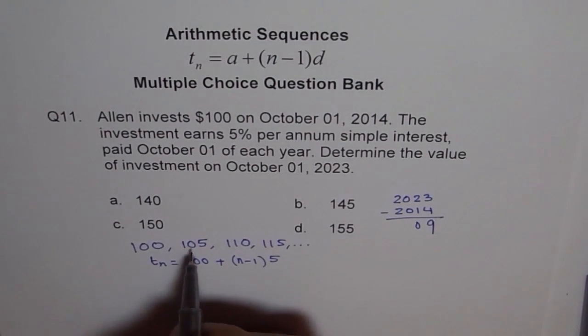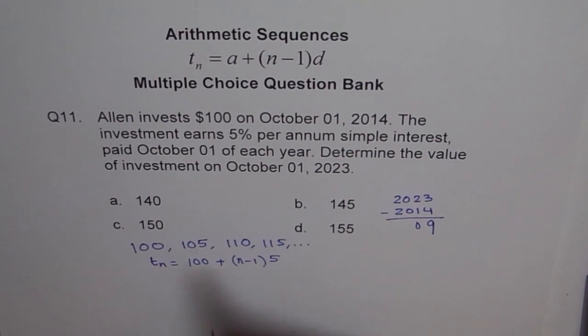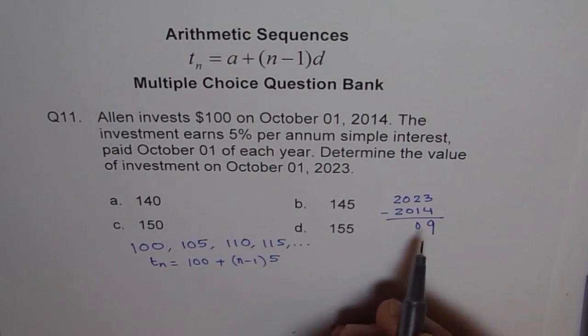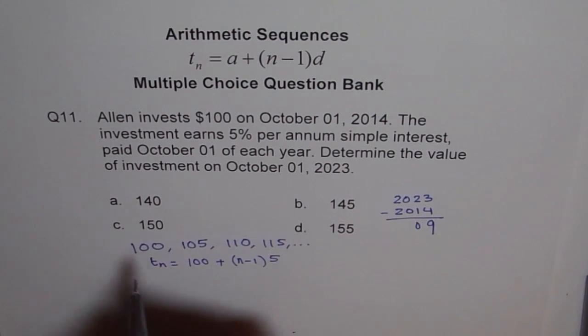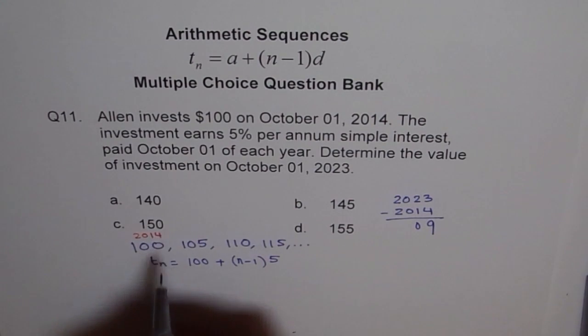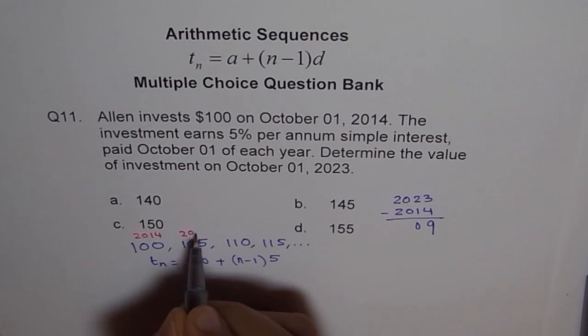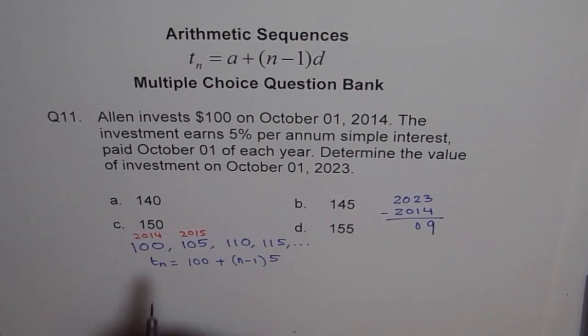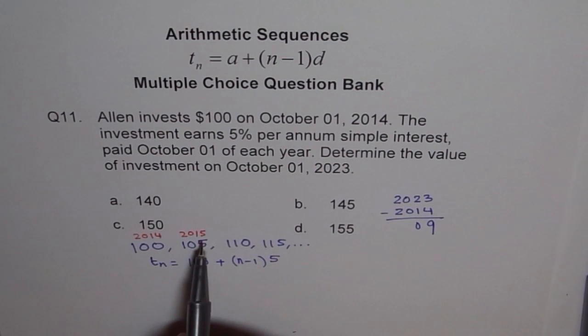So this is the first term. Think like this. Think how many terms will be there. This is 2014. This is 2015. Now, if we consider 2015, then we are on the second term. Do you understand? So that is kind of a catch. I should say 9 more years. That means n minus 1 is 9. N is actually 10.